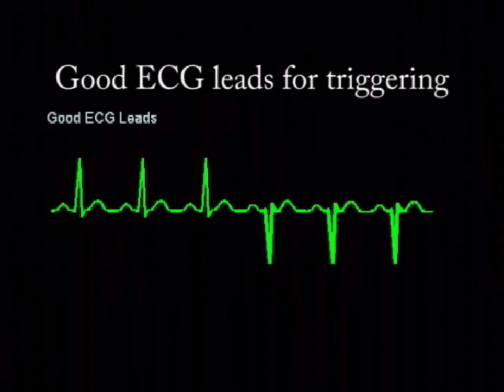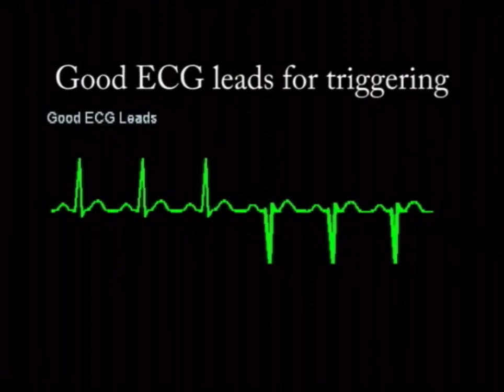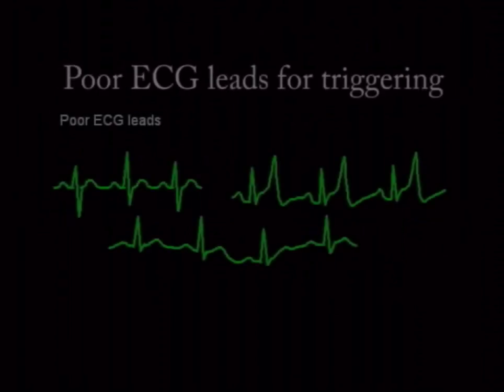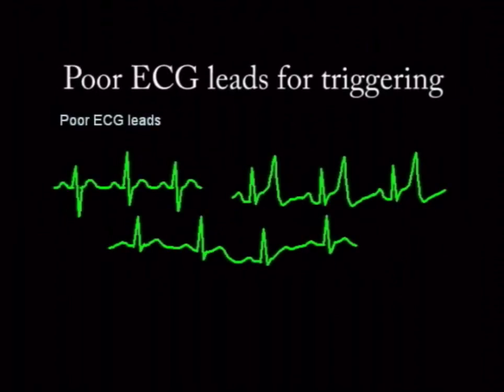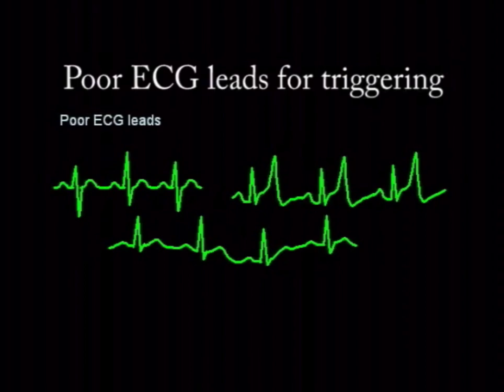As required with all ECG monitoring devices, it is important when applying the ECG electrodes to verify good skin contact and clean signals. Leads with unidirectional QRS complexes are generally the best choice for consistent triggering. Avoid bifasic QRS complex leads, leads with tall P or T waves, leads with wandering baselines, or leads with artifact whenever possible, as these may cause triggering issues.